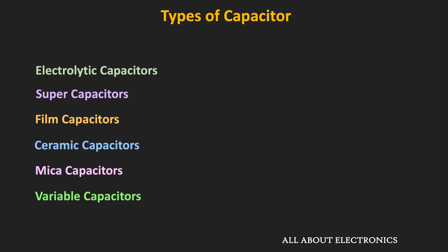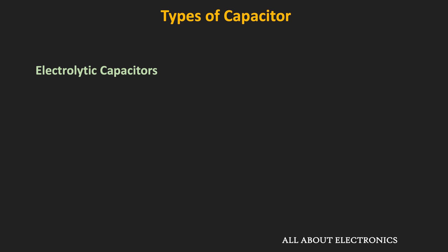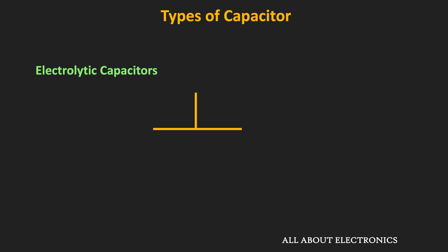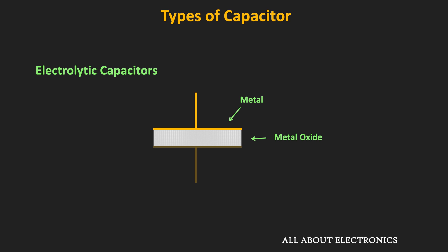First, let's talk about the electrolytic capacitors. Electrolytic capacitors are polarized capacitors where the anode or positive terminal is made up of metal. Through anodization, an oxide layer is created, which acts as an insulator. The electrolyte covers the surface of this oxide layer and acts as the cathode or negative plate of the capacitor.